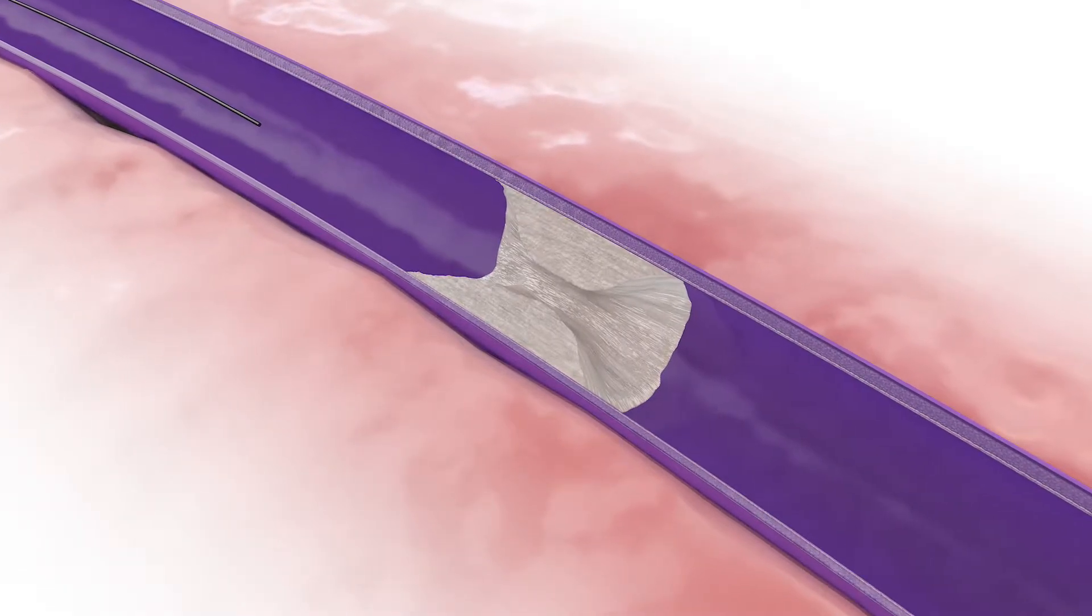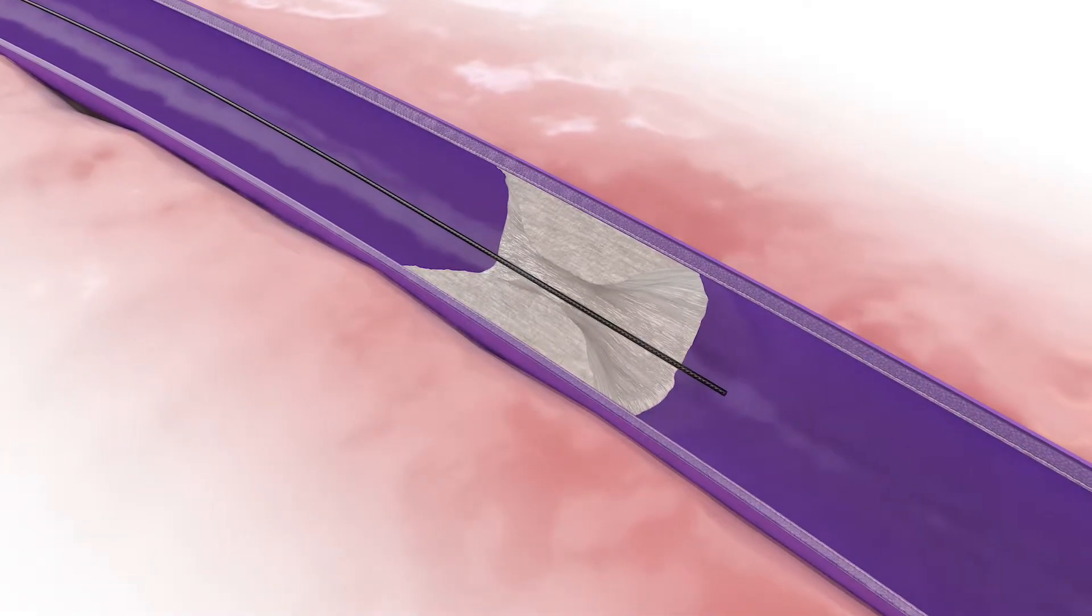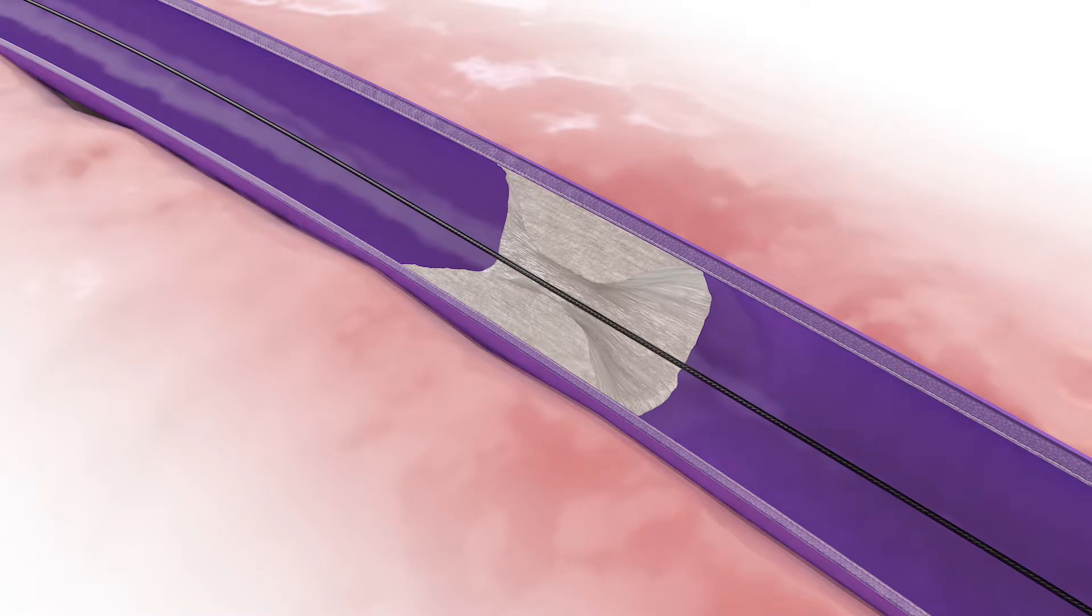The Flex Vessel Prep System is 6 French compatible with either a .014 or .018 guide wire of choice with a crossing profile of 2 mm.